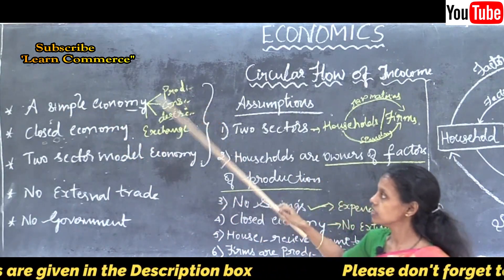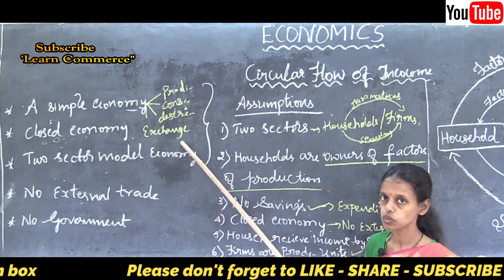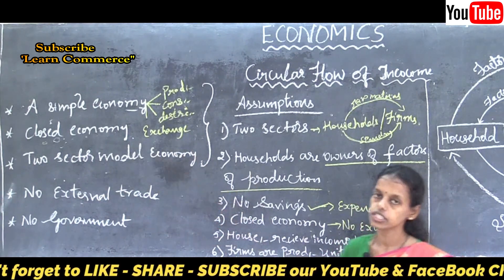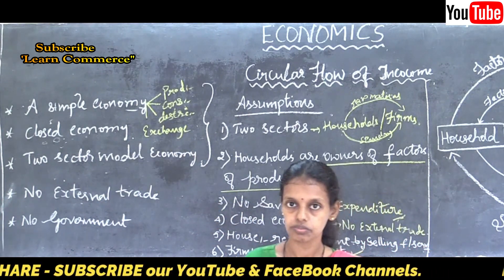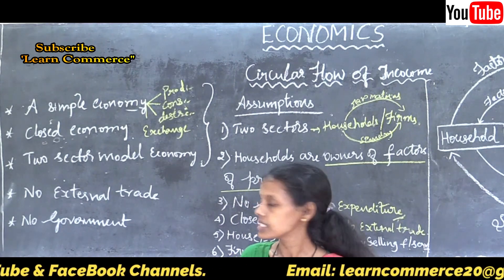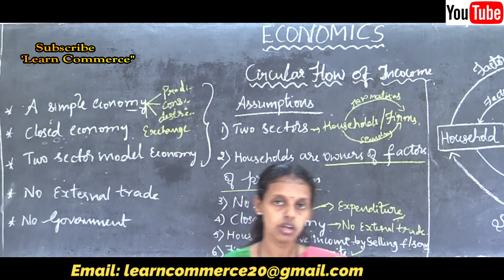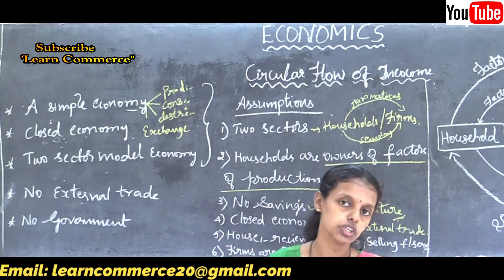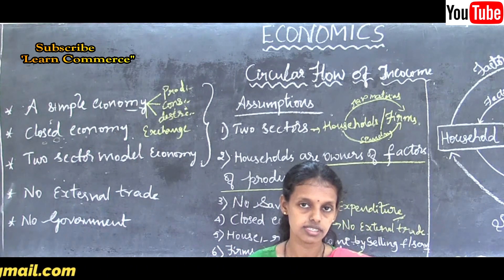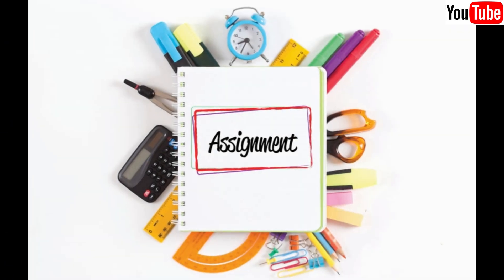We now understand the circular flow of income in a simple economy — a closed economy with a two-sector model, no external trade, and no government intervention. In the next class, we are going to discuss the major macroeconomic identities. Thank you for watching this video.